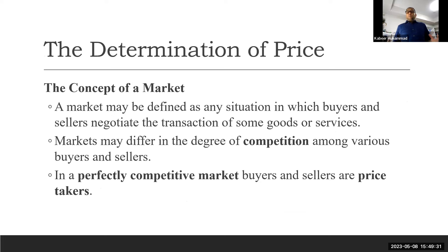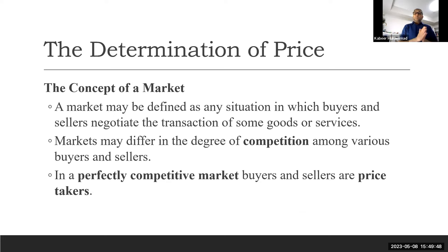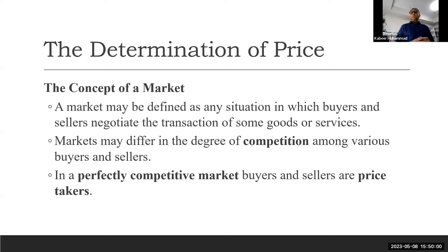When we combine supply and demand, we talk about the market. A market is any mechanism through which buyers and sellers interact, negotiate, and transact goods and services. Markets may differ in degree of competition. The market can be perfectly competitive, or less competitive with very few sellers — we call that an oligopoly.